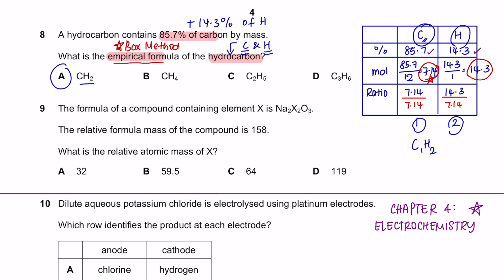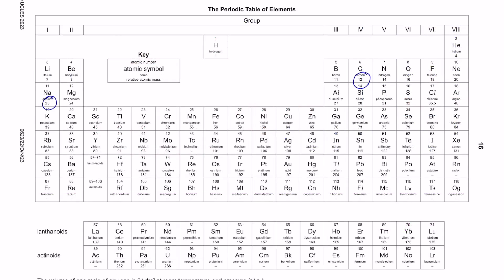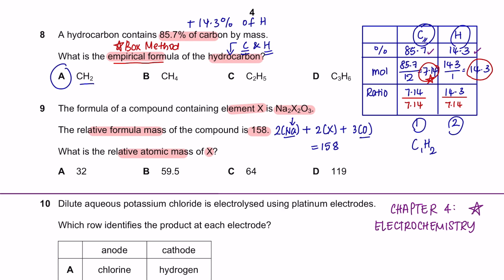Question 9: the formula of a compound containing element X is Na₂X₂O₃. The relative formula mass of the compound is 158, meaning 2 sodiums + 2X + 3 oxygens = 158. The mass of sodium is 23 and oxygen is 16. Substituting: 46 + 2X + 48 = 158. Rearranging gives 2X = 64, so X = 32. The answer is A.